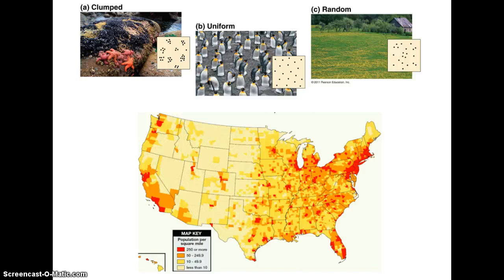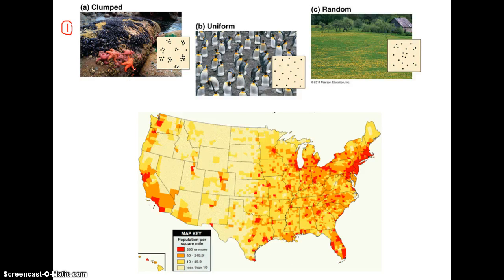This slide represents two out of three factors we use when describing important aspects of a population. The pictures labeled A, B, and C across the top represent the first descriptor: geographic distribution of a population, or population distribution. Distribution simply means how the individuals in a population are spread out over a given area — what pattern do they show across that area?